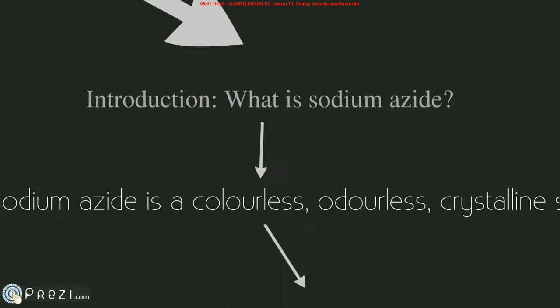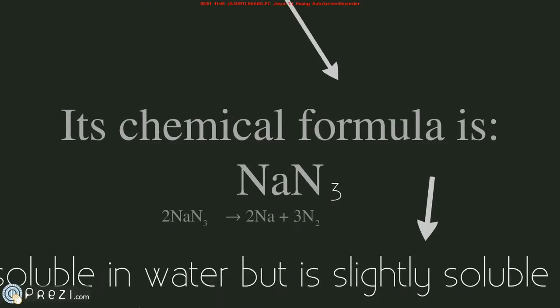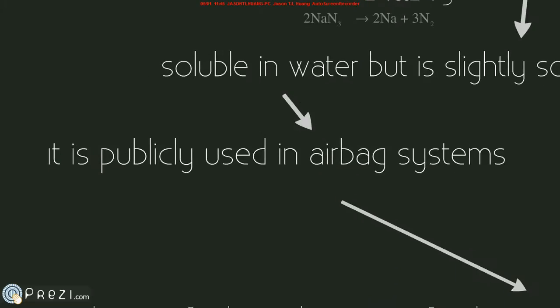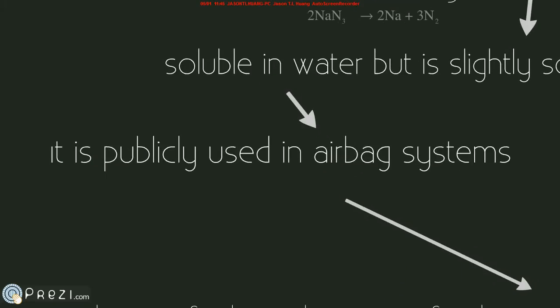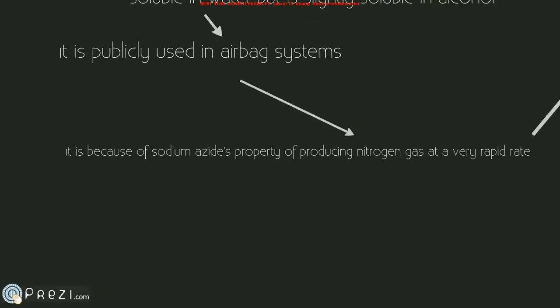What is Sodium Azide? Sodium Azide is a colorless, odorless, crystalline salt. Its chemical formula is displayed here and below it is the decomposition reaction of Sodium Azide. Notice that nitrogen gas is being produced as a product. This substance is highly soluble in water, but only slightly soluble in alcohol. It is used by the general public in airbag inflation systems for automobiles, because of Sodium Azide's property of producing nitrogen gas at a very rapid rate.